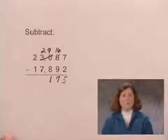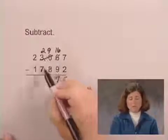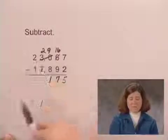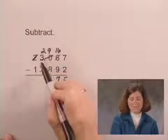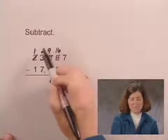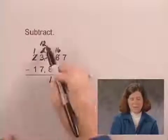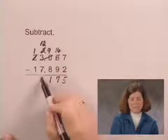Moving to the 1000s column, we want to subtract 2 minus 7. Again, we'll need to borrow. Looking at the 10,000s, we rename 1 of the ten thousands as 10 thousands. And we subtract 12 minus 7 is 5.